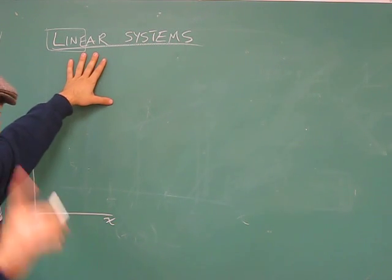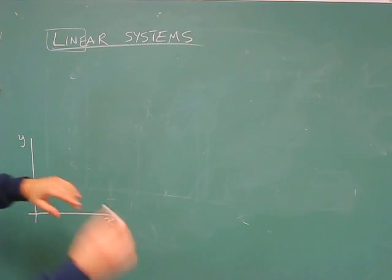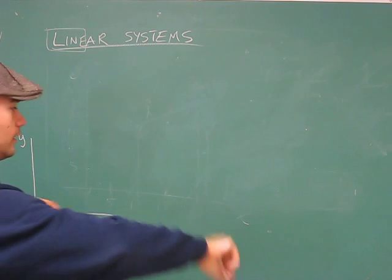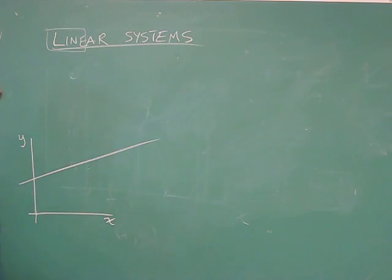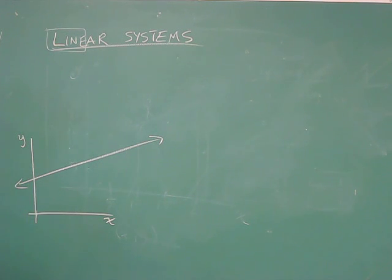Linear systems - first thing, the root word: line. What that means is we're dealing with a line, a straight line. Not a wavy line, just a straight line. Goes forever, both directions. Linear systems are all about lines.